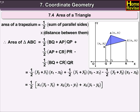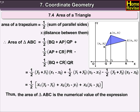That equals half into [x₁(y₂ − y₃) + x₂(y₃ − y₁) + x₃(y₁ − y₂)]. Thus, the area of triangle ABC is the numerical value of the expression: half into [x₁(y₂ − y₃) + x₂(y₃ − y₁) + x₃(y₁ − y₂)].